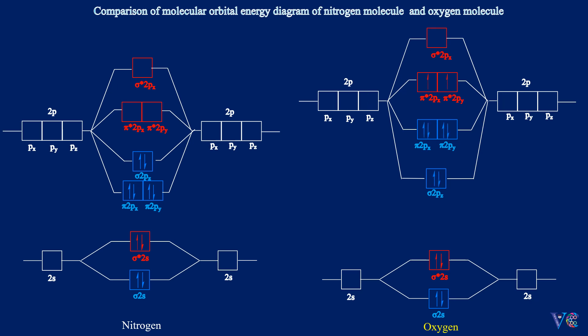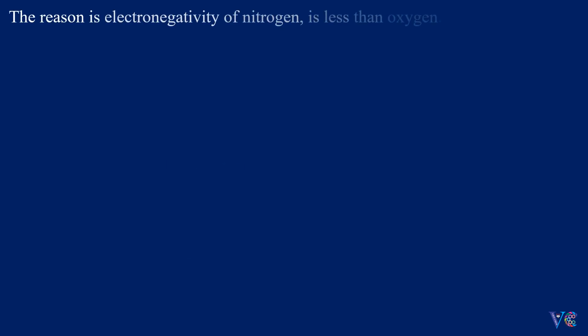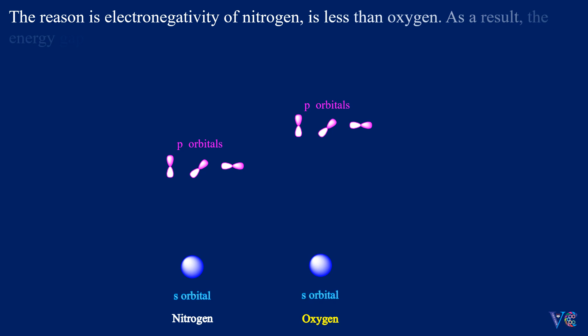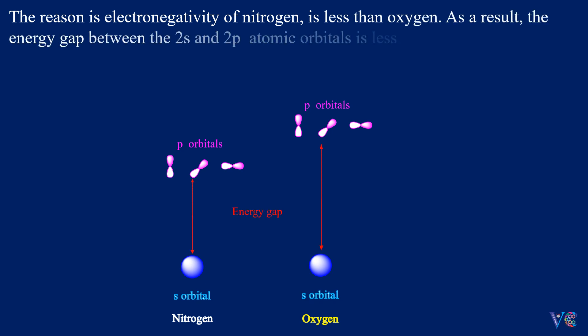In the case of nitrogen, π2Px and π2Py have less energy than σ2Pz. While in the case of oxygen, σ2Pz has less energy than π2Px and π2Py. The reason is that the electronegativity of nitrogen is less than oxygen. As a result, the energy gap between the 2S and 2P atomic orbitals is less in nitrogen when compared with oxygen.